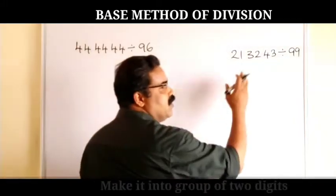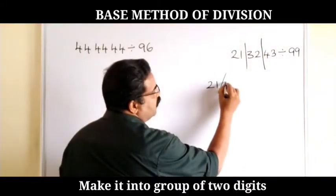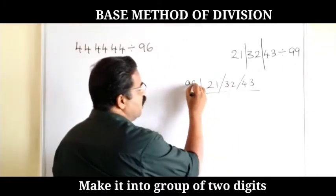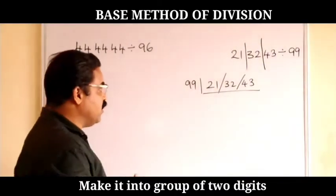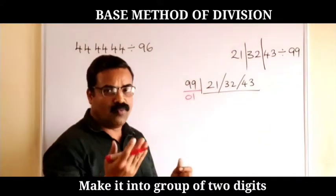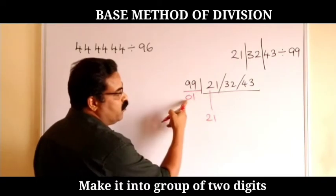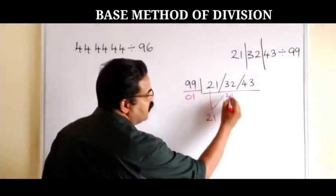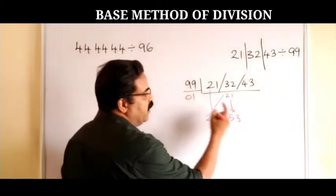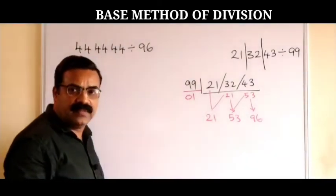We have to group this number in groups of two, so I divide it as 21, 32, and 43. I need to divide it by 99. The deviation of 99 from 100 is 1. Now I write 21 here, multiply 21 by 1 and add it — I get 53. Then multiply 53 by 1 and add it — I get 96. That's it, three steps.